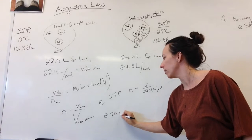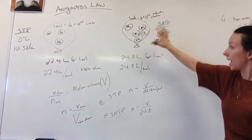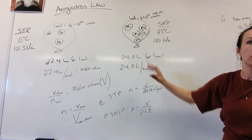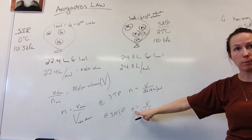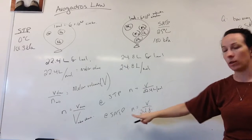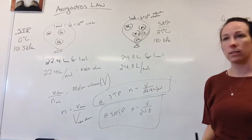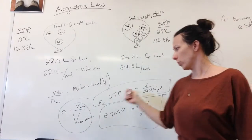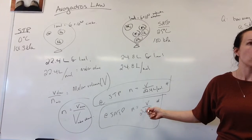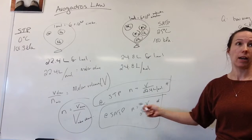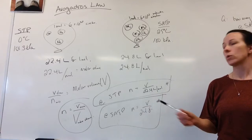At SATP, N equals volume divided by 24.8 liters per mole. If I wanted 2 moles, the balloon is twice as big. Half a mole would be 12.4 liters. So I have two formulas to figure out how many moles are in a balloon of a given volume, and they must be different for STP and SATP. Yes, you do have to memorize these.